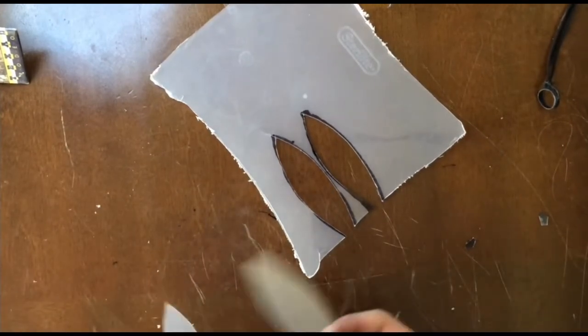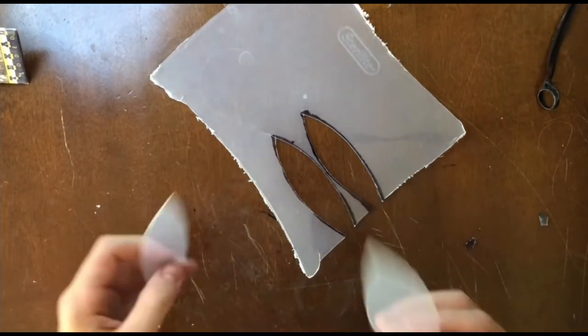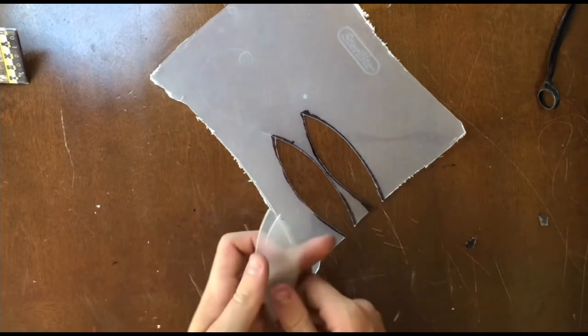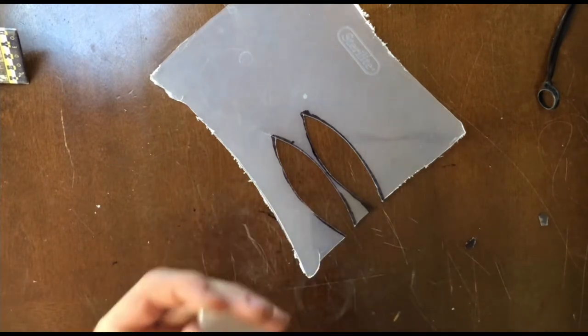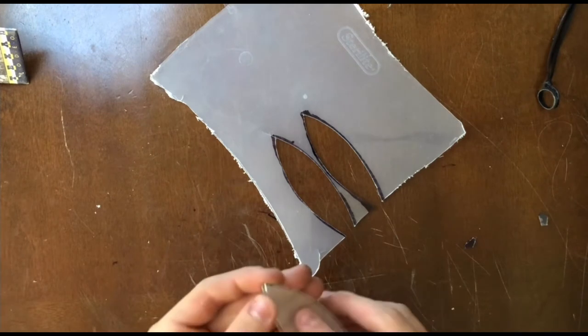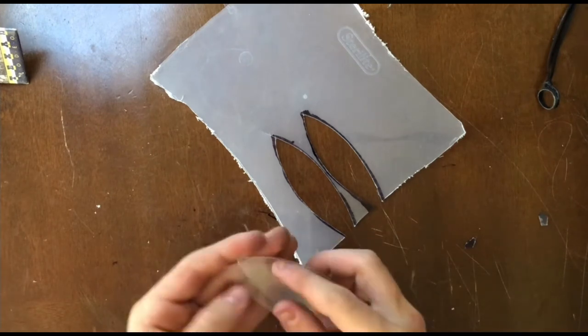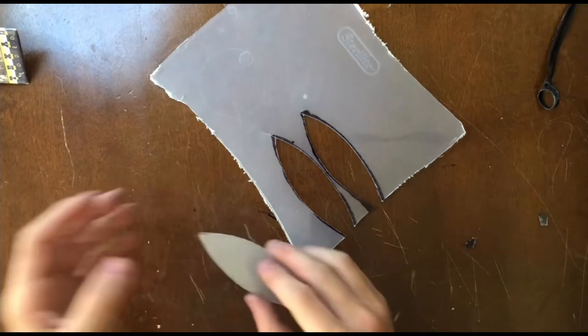Now that we have the cut out, we will be sanding them. And that's for when we put them together, it will give them extra grip. And so they don't slide around as easily while we're gluing them down.